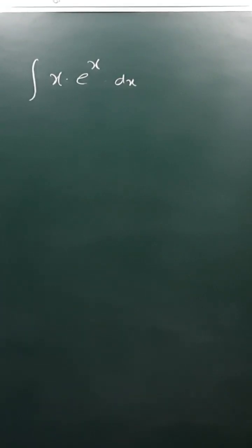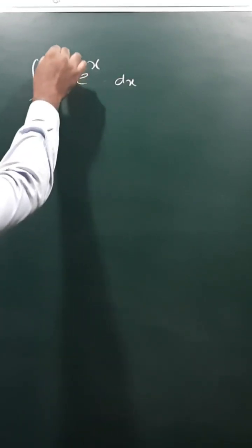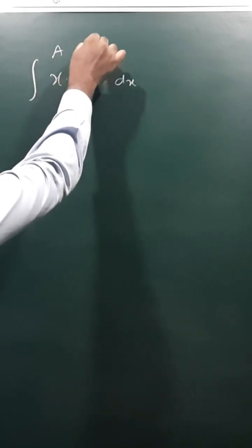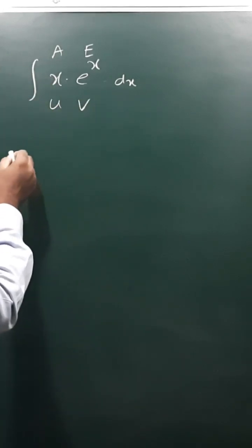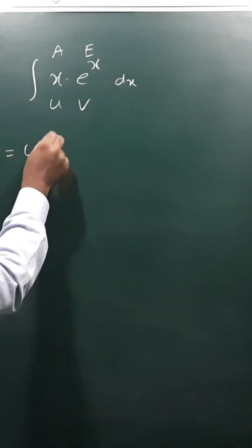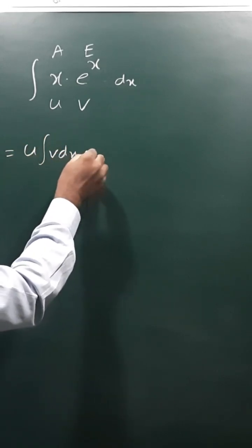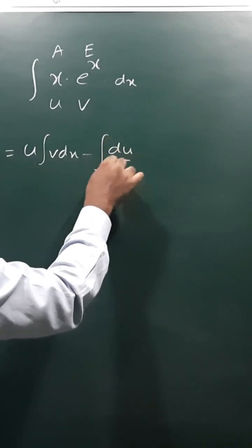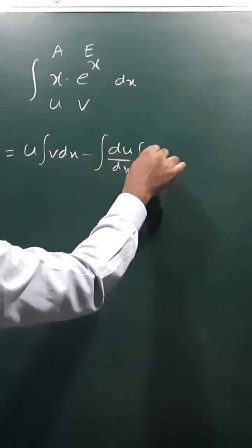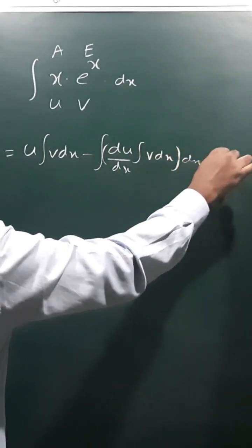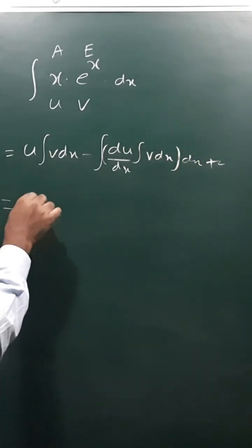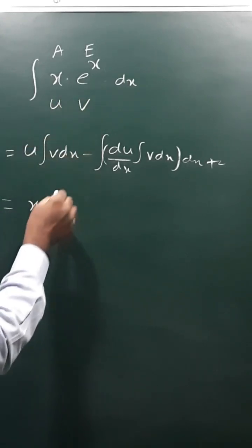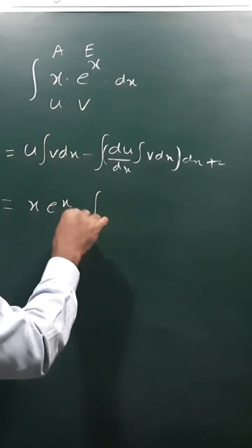The integral of x·eˣ dx — the algebraic part is x and the exponential part is eˣ, so we take u = x and v = eˣ. By integration by parts: u·∫v dx − ∫(du/dx · ∫v dx) dx + c. So u is x, and ∫v dx means ∫eˣ dx which is eˣ.